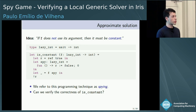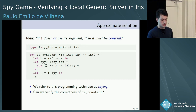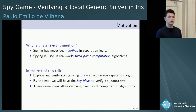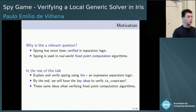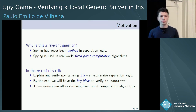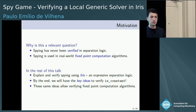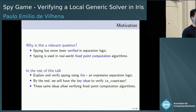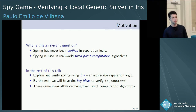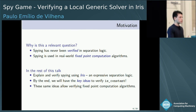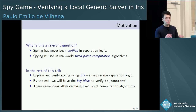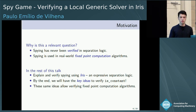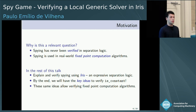So now you ask: can we verify this code? Before we attack the question, let's consider the motivation. There are two reasons why this is relevant. First, spying has never been the subject of verification work in separation logic. Second, spying is related to the design of real-world programs, such as algorithms for computing fixed points. For the rest of the talk, I will focus on the function is_constant, give you the proof sketch, and by the end you will have the key ideas to understand its verification.